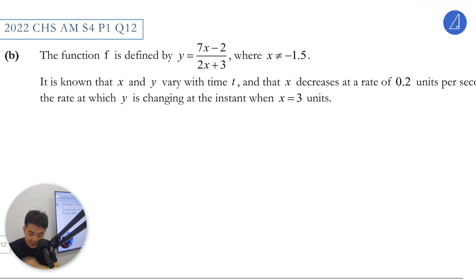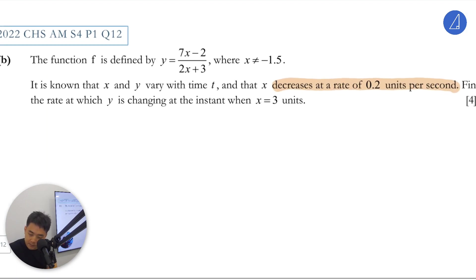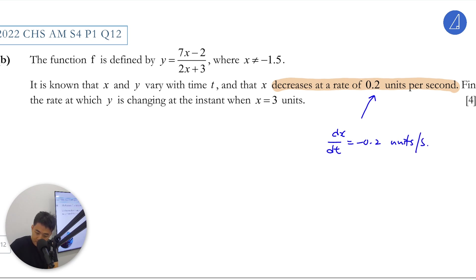So this case function f. We are given that x decreases at this rate — let's write it down. Find the rate at which y is changing at the instant when x is 3, so find dy/dt.